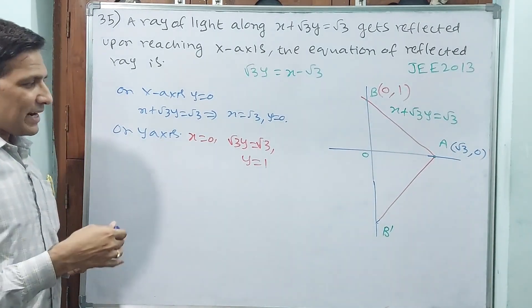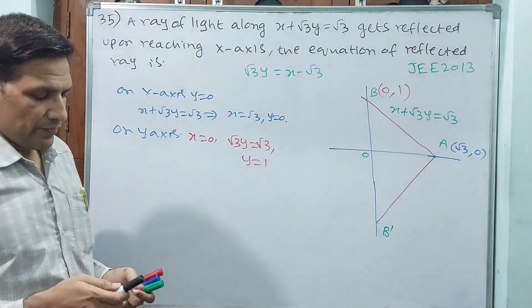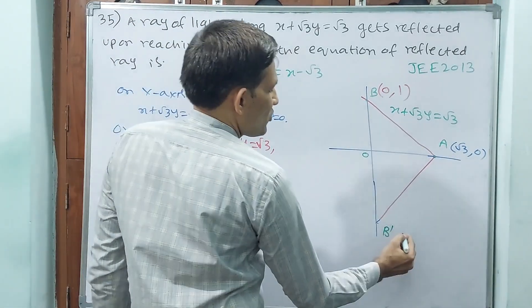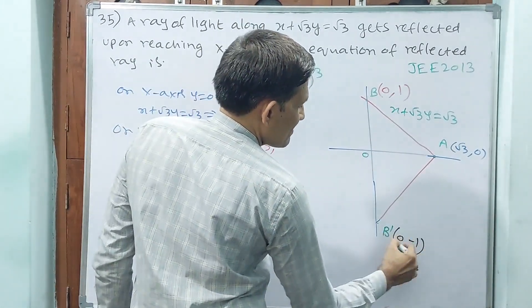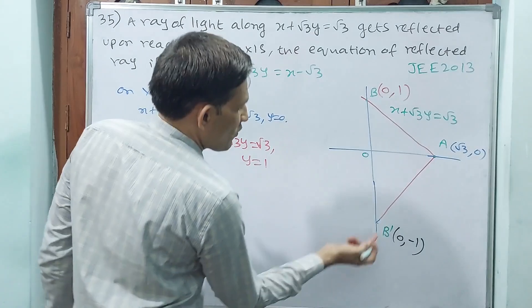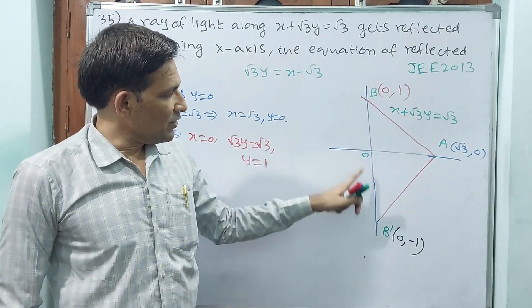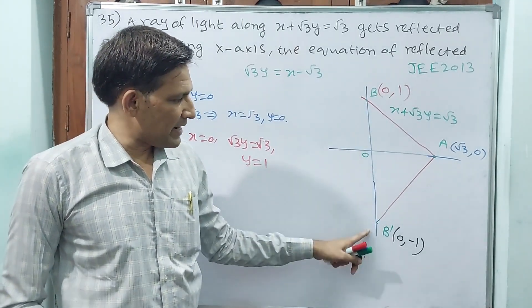Now you stop and analyze. What means to the point, this B dash? X is 0 only, but y is minus 1. From 0 to 1, to 0 to minus 1. Same distance image but in opposite direction. On x-axis, but y-axis is 1. On x-axis, but minus 1.